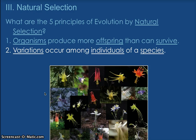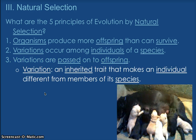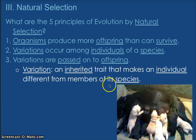Number two: variations — differences. That's my seventh grader way of saying variations. Variations occur among individuals of a species; they all look different from each other. Variations are also passed on to the offspring, meaning the variations are actually inherited — they are in their genetic code. Just to define variation, because this is a vocabulary word, so make sure you add it to your vocabulary template. A variation is an inherited trait that makes an individual different from members of its species. Here you see the variation would be white coloring — that inherited trait is passed on to the kids. It could be hair color, eye color — those are all variations.